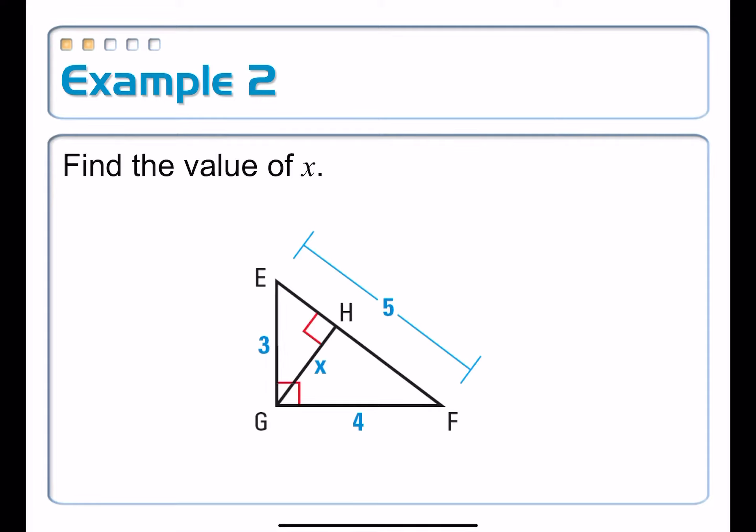Find the value of X. And notice that X here is the length of the altitude from the right angle to the hypotenuse. And we have ourselves a good old-fashioned 3, 4, 5 right triangle.